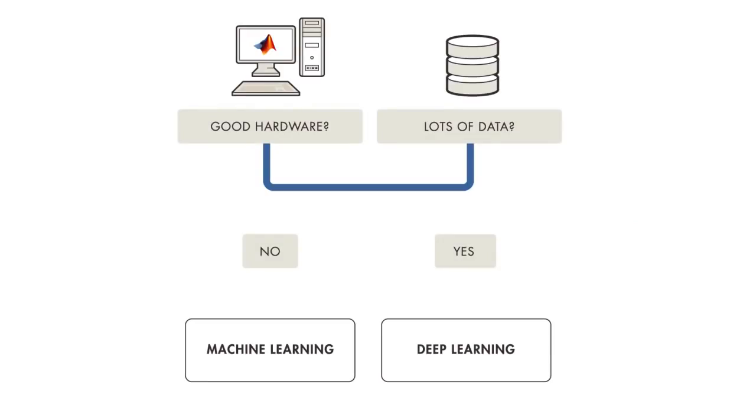When choosing between machine learning and deep learning, you should ask yourself whether you have a high-performance GPU and lots of labeled data. If you don't have either of these things, you'll have better luck using machine learning over deep learning.